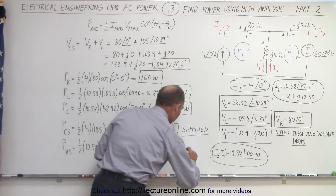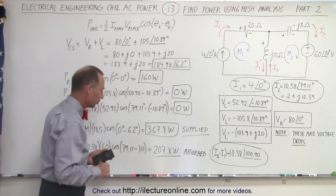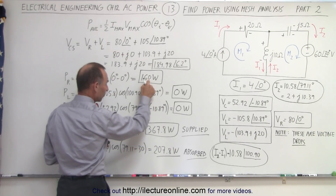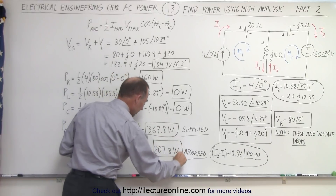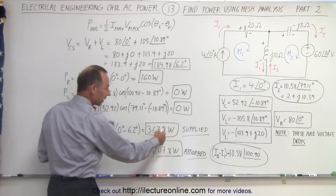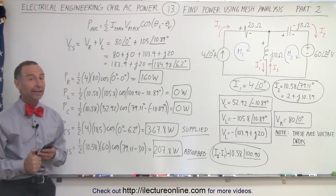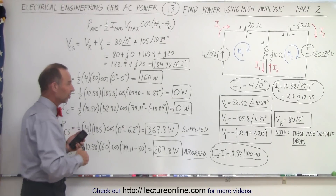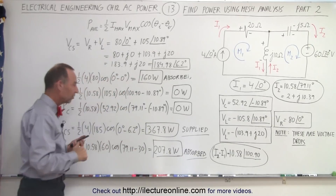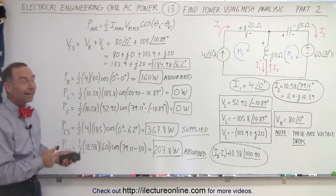That 207.8 watts would be power consumed, or absorbed, as many textbooks call it. So you can see: 367.8 watts is supplied by the current source. We consume 160 watts via the resistor and 207.8 watts via the voltage supply. Adding those two together gives 367.8 watts — the power supplied by the current supply equals the power absorbed by the resistor and the voltage supply combined. So the power balance checks out, and that's how it's done.